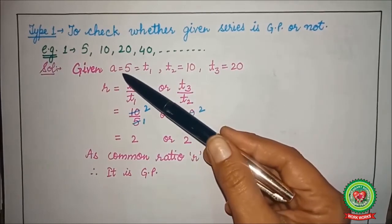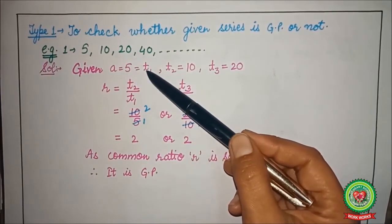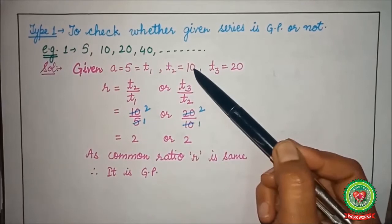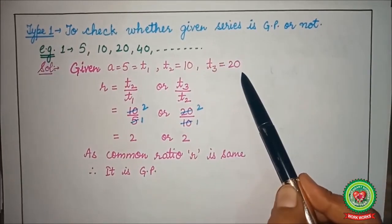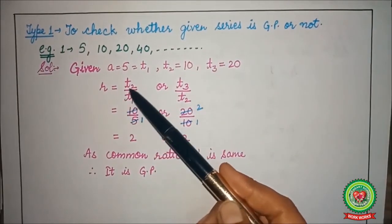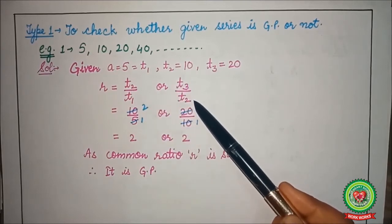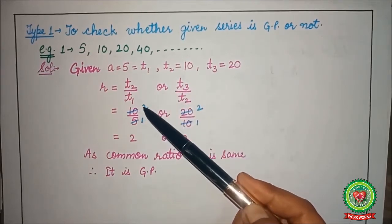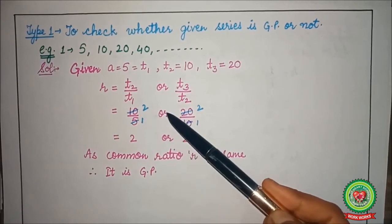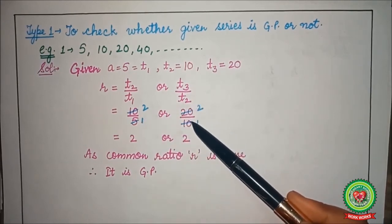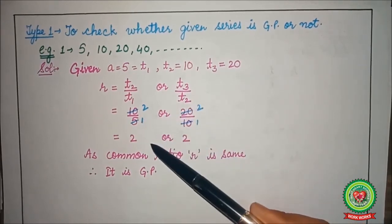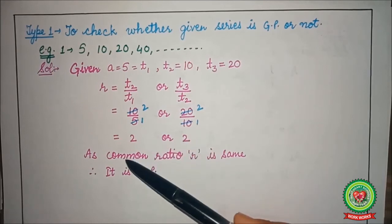Now here first term a is 5, second term 10, third term 20. Now find the r, that is second by first term or third by second term. Put the values 10 upon 5 or 20 upon 10. After cutting we are getting 2. As common ratio is same, so it is a GP.